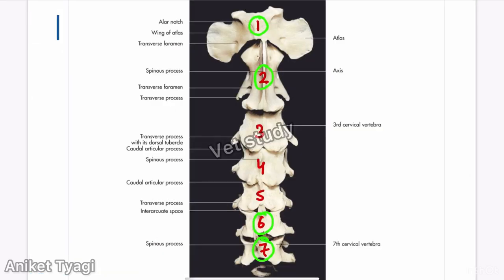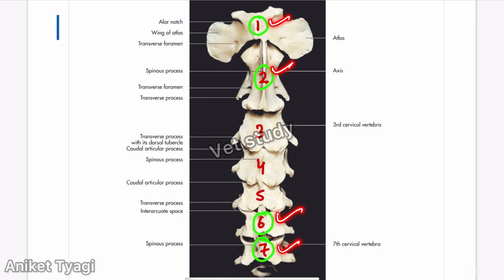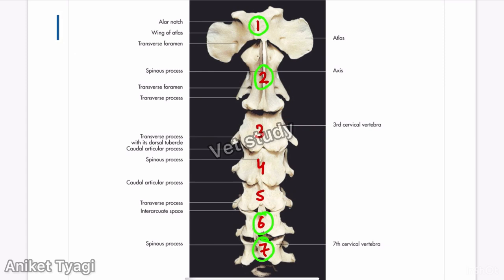Looking at the cervical spine of the dog, you can see 7 vertebrae. Vertebrae 1, 2, 6, and 7 are atypical and differ in shape and size, while vertebrae 3, 4, and 5 are typical. For the typical vertebrae, the body is long with prominent convexities at the cranial end and concavities at the caudal end.